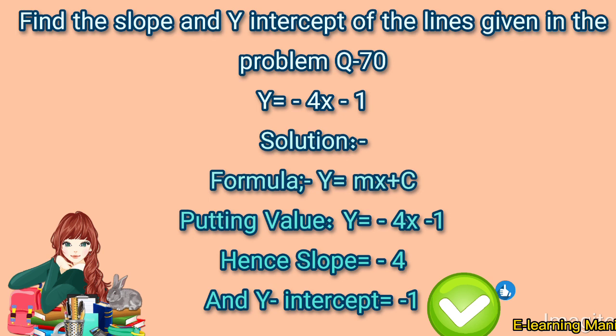Putting values from Y = -4X - 1 into the formula Y = mx + c, we see that m = -4. M is the slope, so the slope is -4.